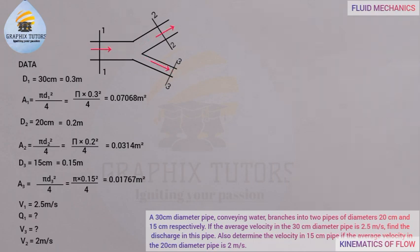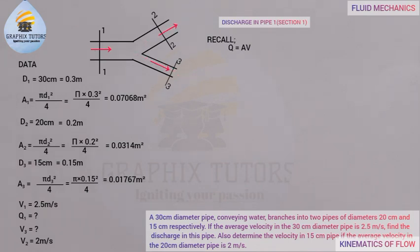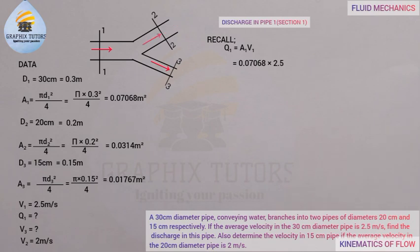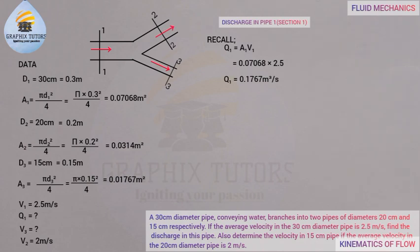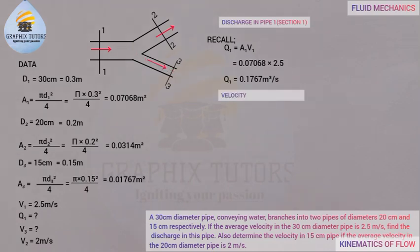To calculate the discharge in pipe 1 (section 1), recall that discharge Q = area × velocity. So Q1 = A1 × V1 = 0.07068 × 2.5 = 0.1767 cubic meters per second. To convert to liters per second, multiply by 1000.